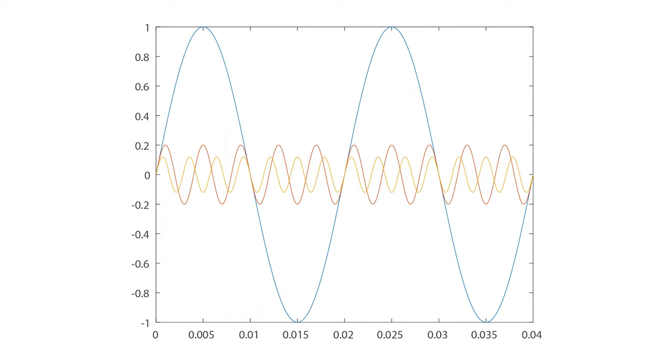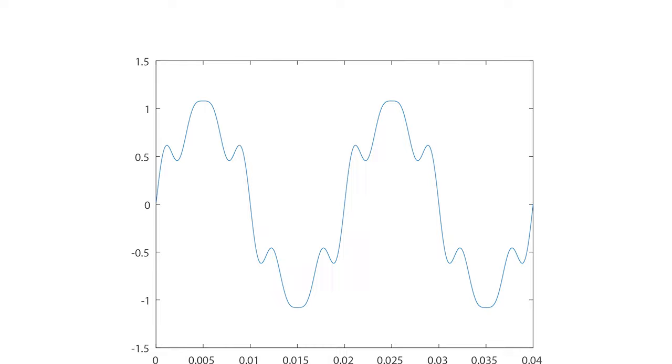We will consider the fundamental current — that would be 50 Hz or 60 Hz — and we will consider the fifth and the seventh harmonic. In the third picture you will see a waveform: first the fundamental, then the fifth and seventh harmonic, and in the second variation of the picture you will see the complex waveform — the sum of these harmonics and the fundamental current.